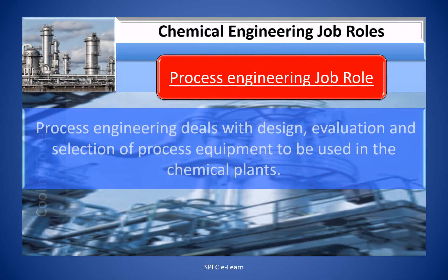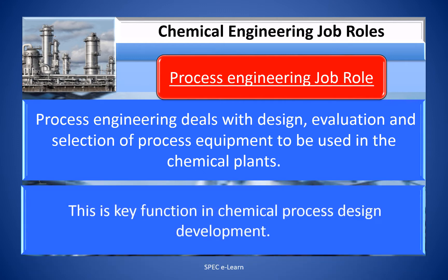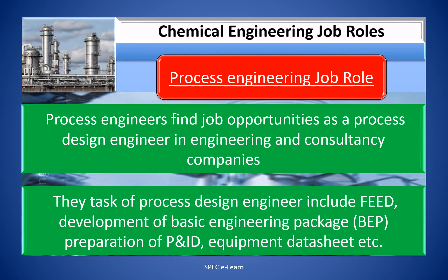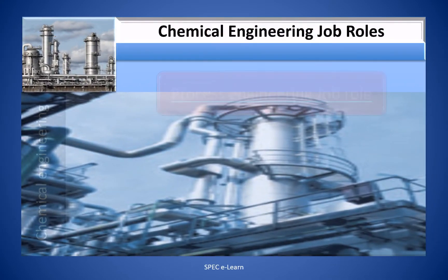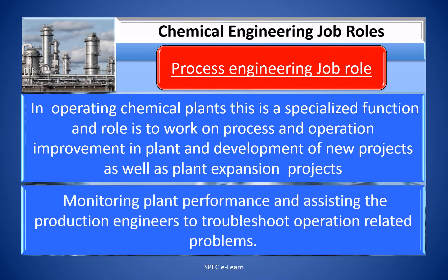Process engineering job role. Process engineering deals with the design, evaluation, and selection of process equipment used in chemical plants. This is a key function in chemical process design and development. Process engineers find job opportunities as design engineers in engineering and consultancy companies. Tasks of a process design engineer include FEED, development of the basic engineering package (BEP), preparation of P&IDs, equipment data sheets, and more. In operating chemical plants, the role involves process and operational improvement, development of new projects, and plant expansion projects.